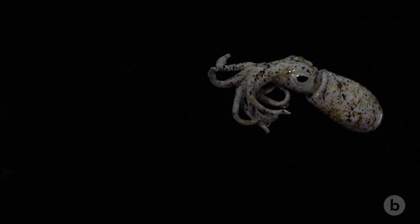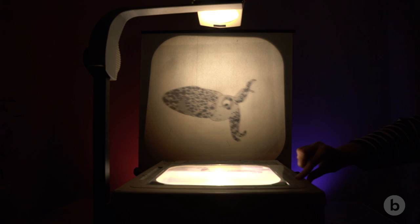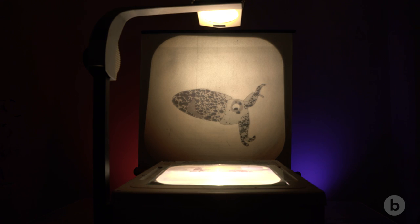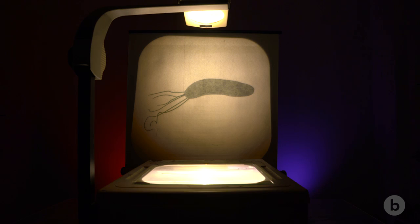But the squid can't hide its shadow by itself. The silhouette-erasing glow comes from another creature entirely. Deep inside the squid is a special light organ that houses a single species of bacteria, the light-producing microbe Vibrio fischeri.